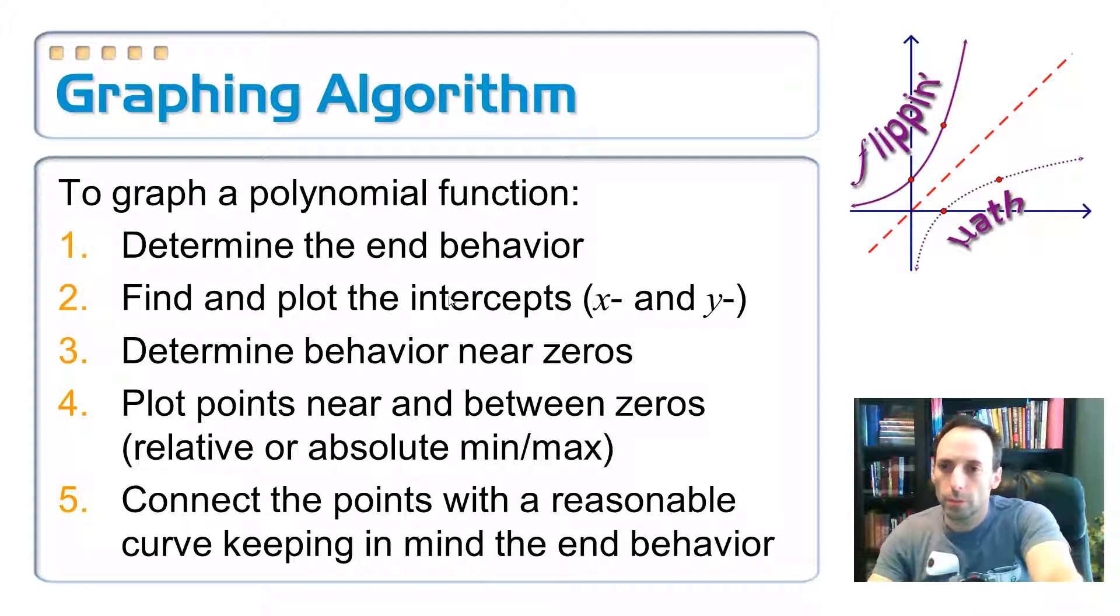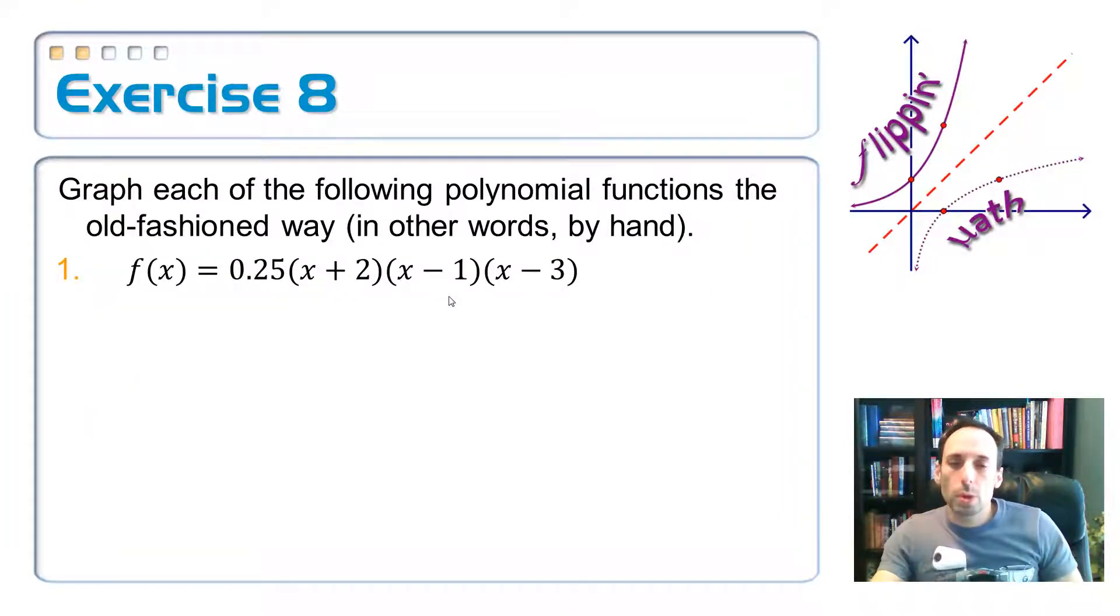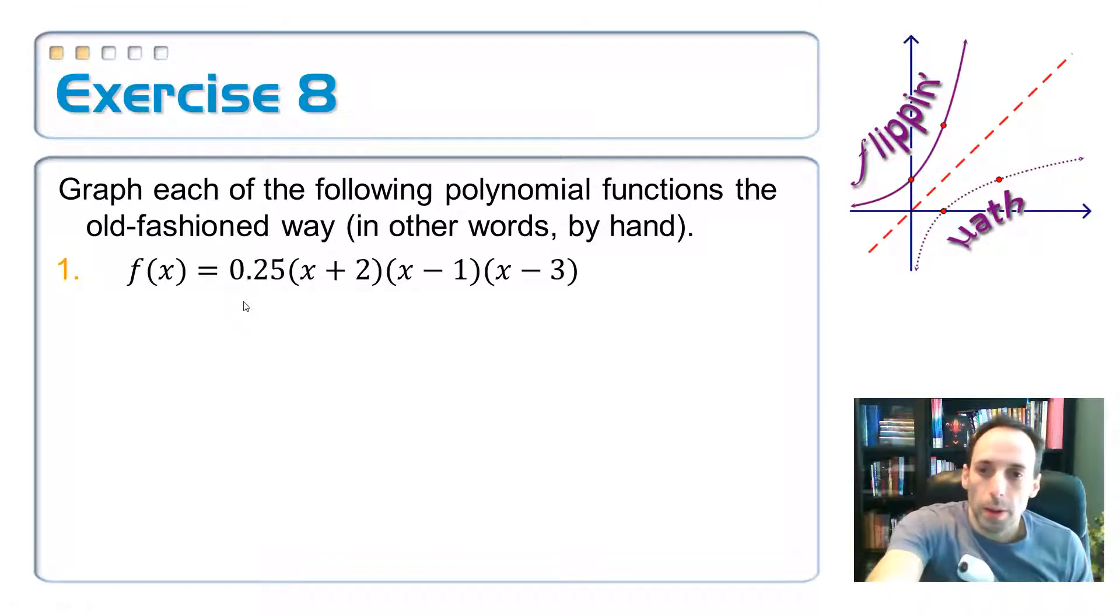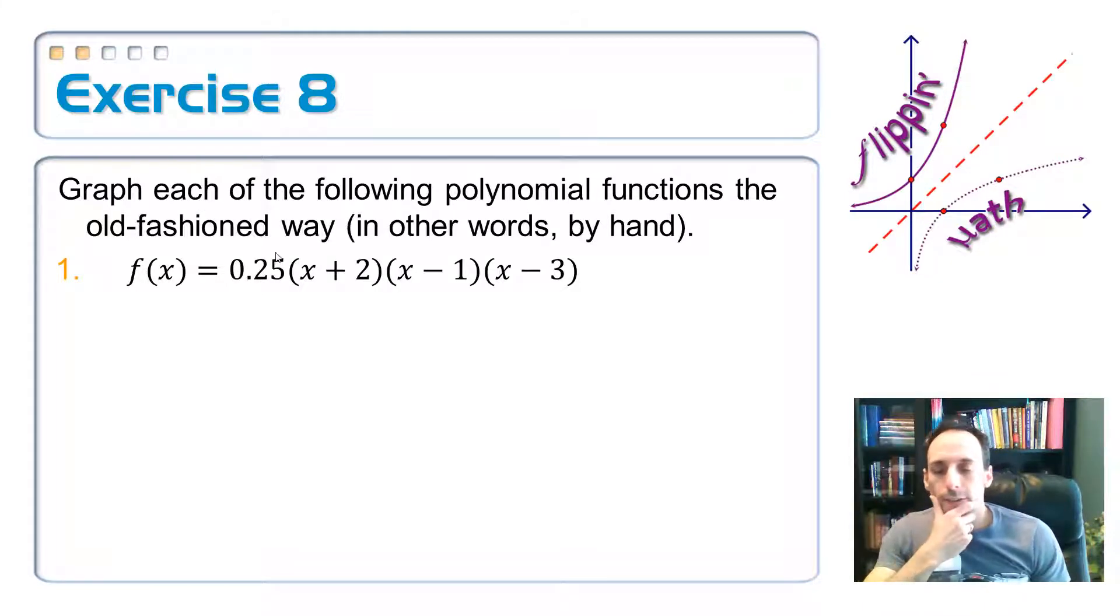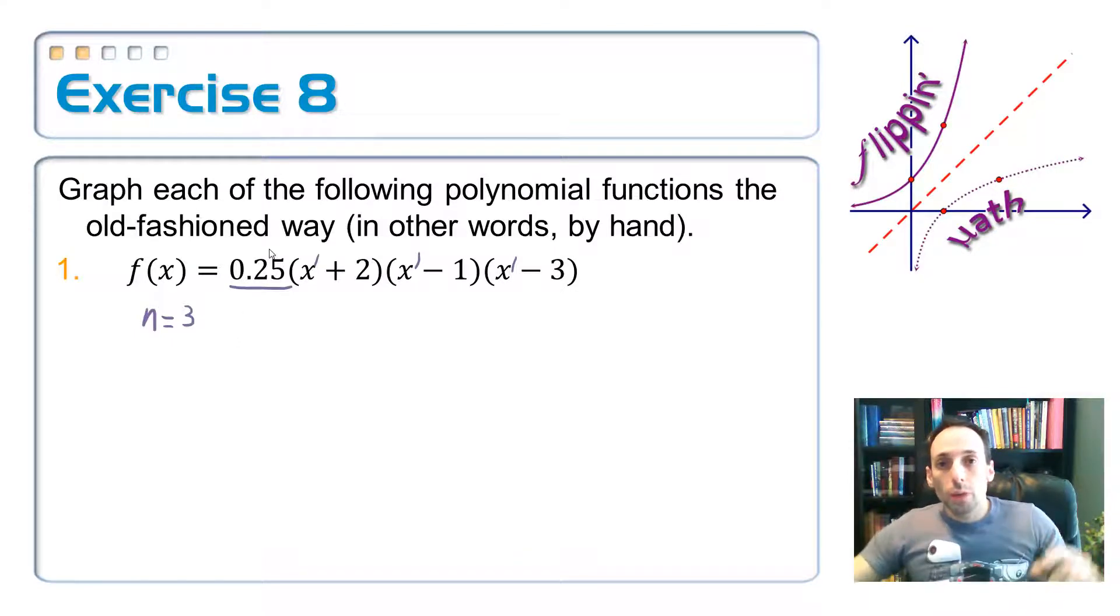The first one, graph this polynomial function the old-fashioned way by hand. We're just sketching the graph. So I needed to look at the very first step was end behavior. End behavior is determined by two things. Leading coefficient, and this is positive, so it's positive, and my degree. I have an x to the first times x to the first times x to the first. My degree is three. So it's going to be odd, which is a disco dancer, and it's positive. So let me just get a little sketch, a little thumbnail sketch. It should be roughly like that whenever I draw my graph.